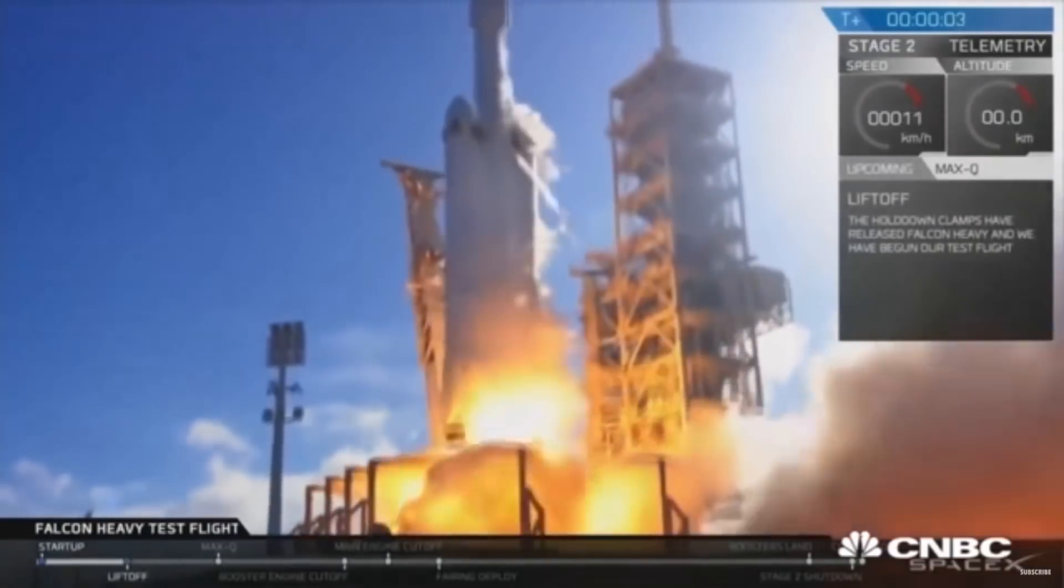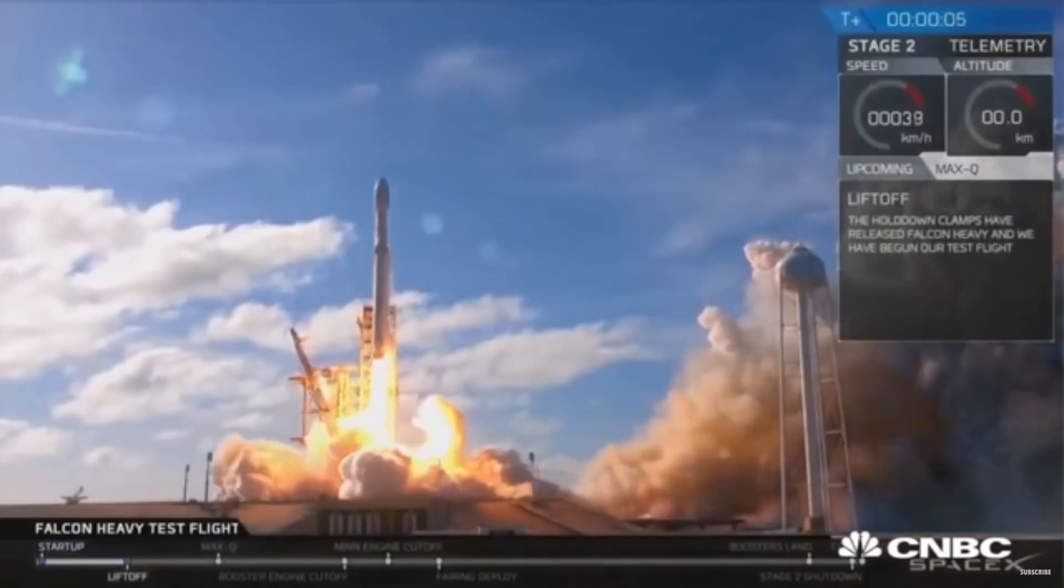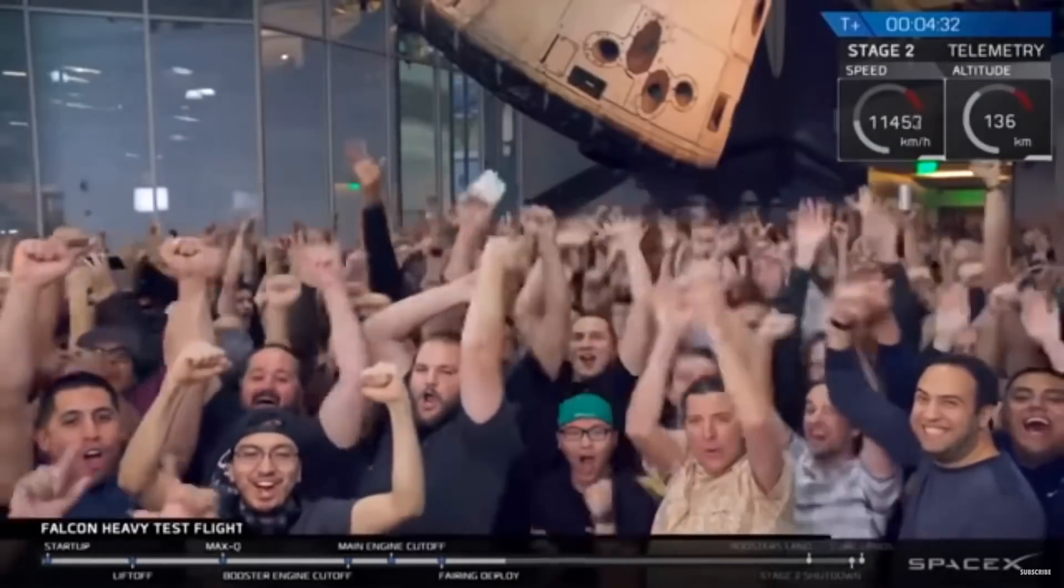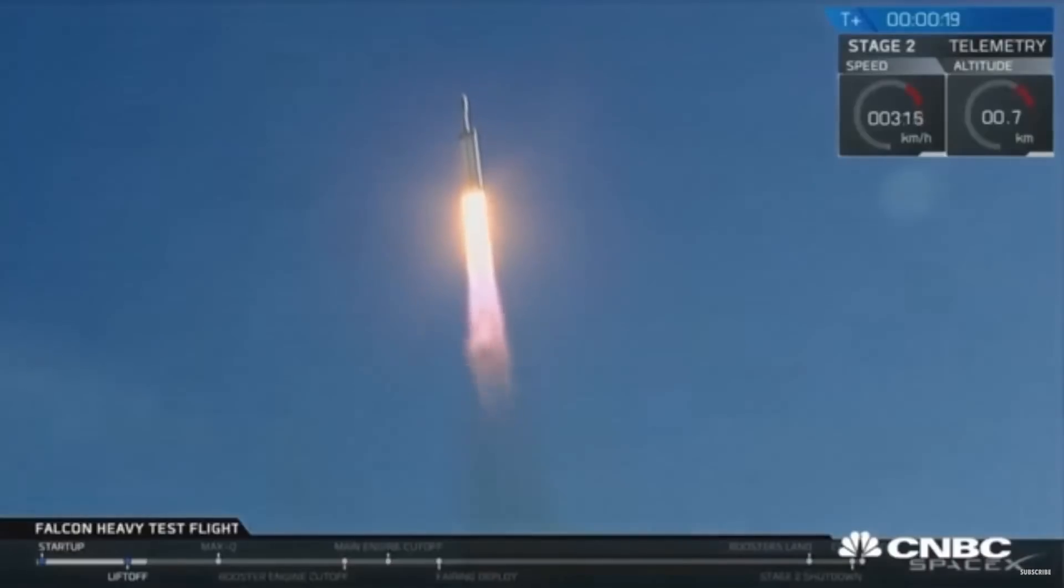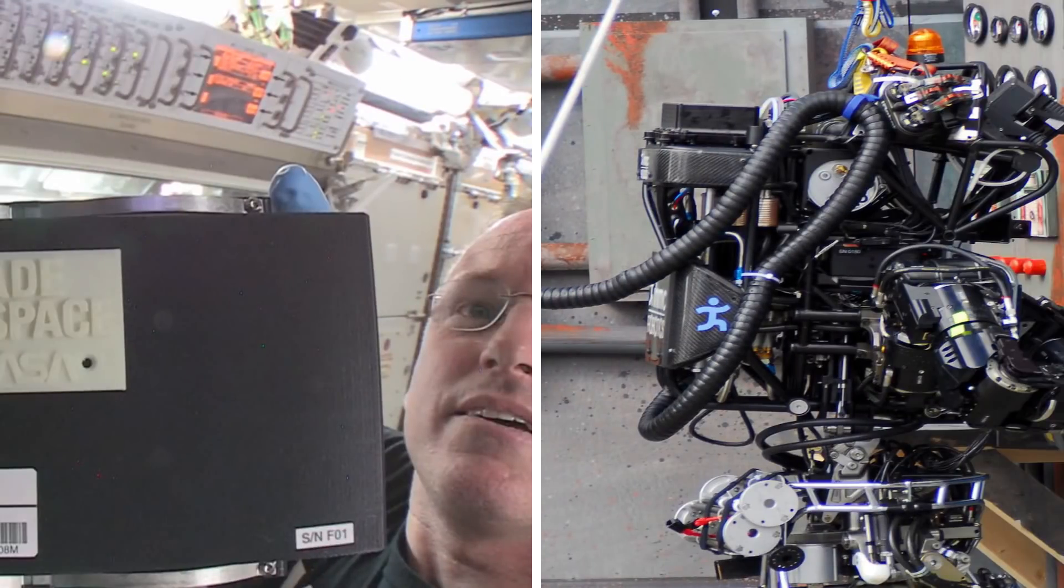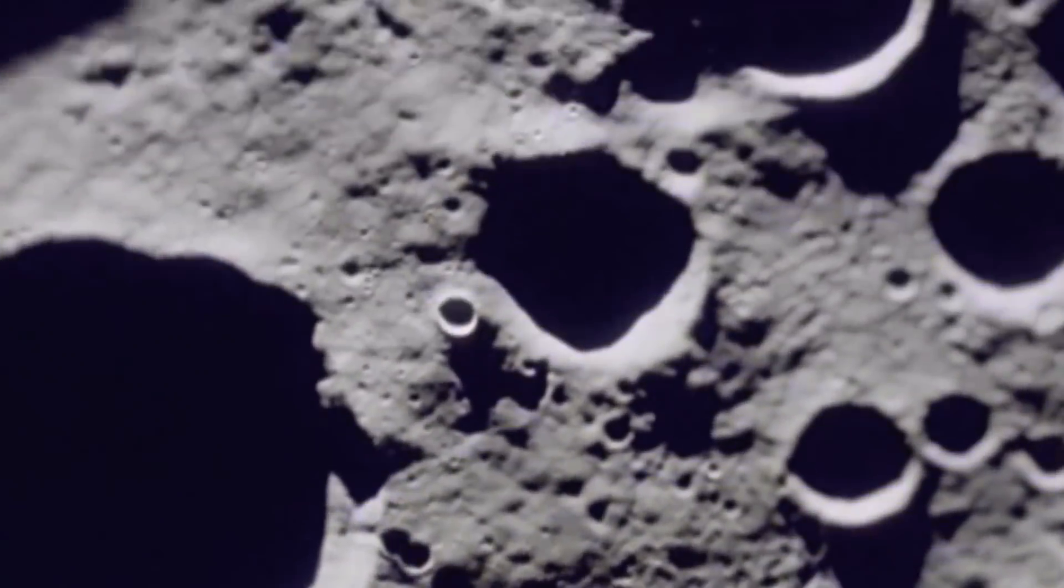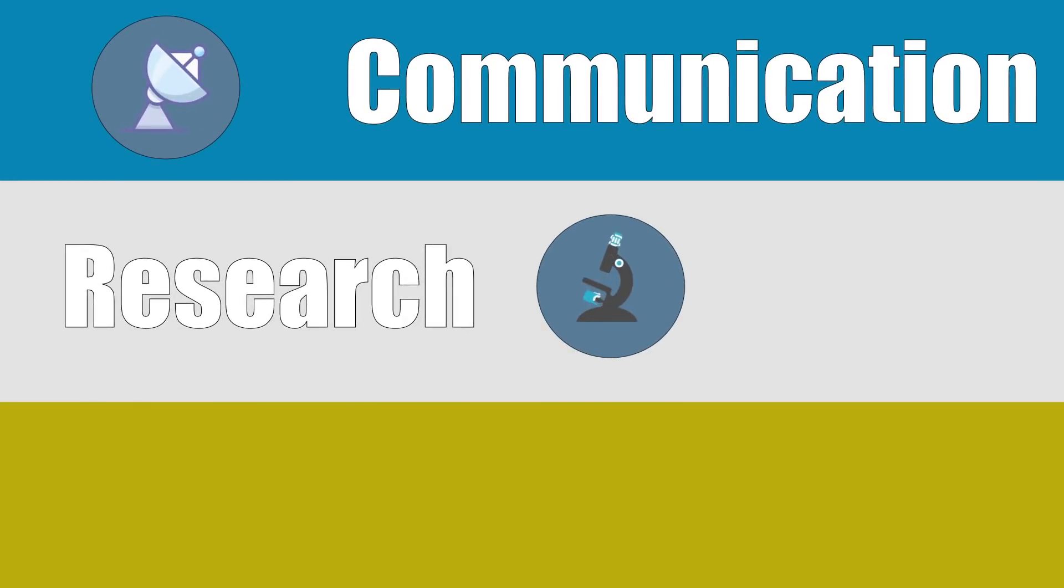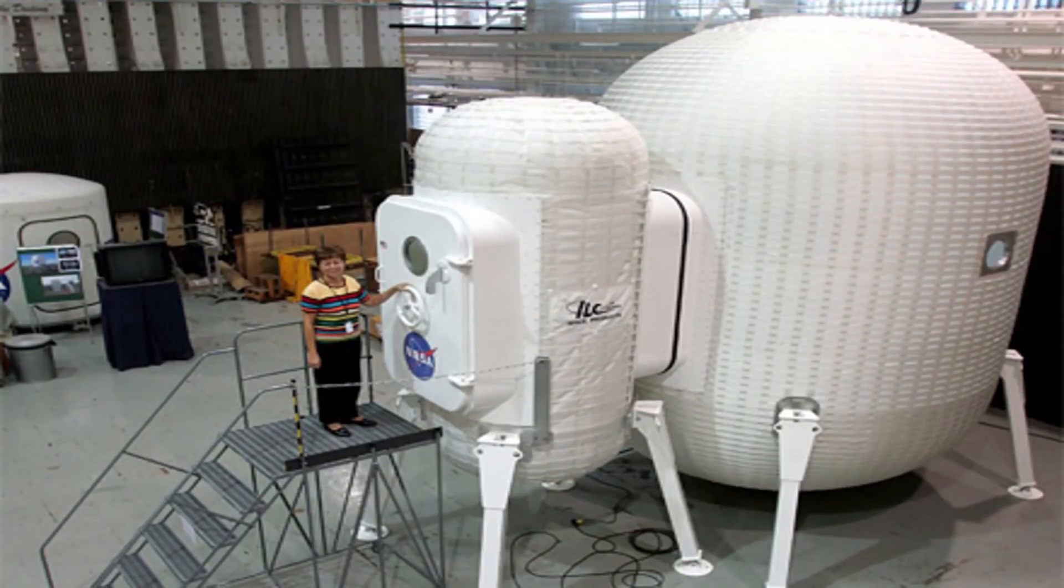But companies like SpaceX are finding new and innovative ways to make space travel cost effective, using renewable rockets like the Falcon 9 and Falcon Heavy. The ESA are also working on developing technologies in 3D printing to better cope with the Moon's environment. A lunar base could have a communication centre, a research lab, and facilities and habitats for the people living there.